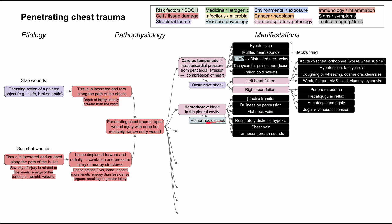Hemothorax can cause hemorrhagic shock — a hypovolemic shock from bleeding into the pleural cavity. The entire thorax is a large space and can contain a significant amount of the body's systemic blood. Another problem in the pleural space is air: a pneumothorax, where air in the pleural cavity can lead to lung collapse.